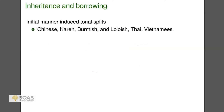Some examples: initial manner-induced tonal splits occurred around the same time in Chinese, Karen, Burmish, Loloish, Thai, and Vietnamese. For Thai and Vietnamese we know it's contact-induced because they're not even related languages. But the question arises whether, when Burmish and Loloish underwent a similar tone split, it was one event — because Lolo-Burmese was still one language — or through contact. That kind of thing has yet to be well worked out.